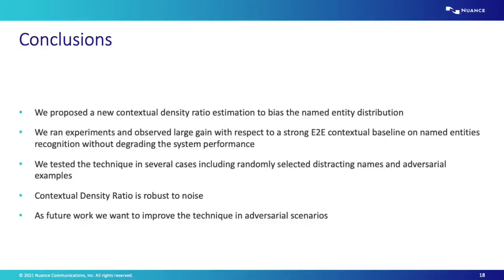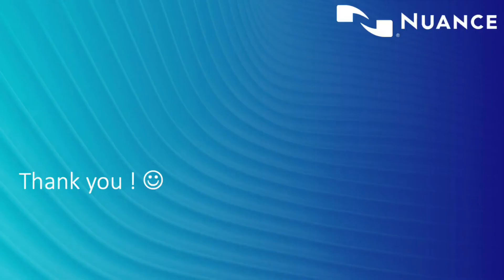In conclusion, we have proposed a new contextual density ratio estimation to bias the named entity distribution. We observed large gains over a strong end-to-end contextual baseline on named entities without degradation of global system performance. We tested the technique including randomly selected distracting names and adversarial examples, showing that contextual density ratio is robust to a certain amount of noise. As future work, we want to improve the technique in adversarial scenarios. Thank you very much for listening — I will be delighted to answer questions in the virtual session.